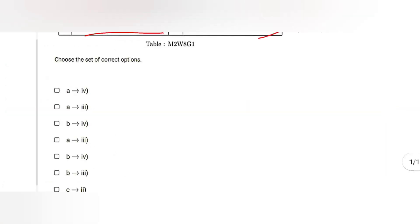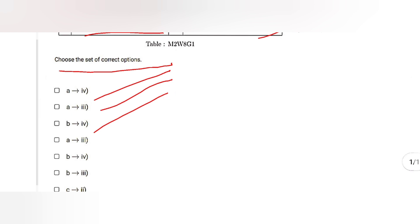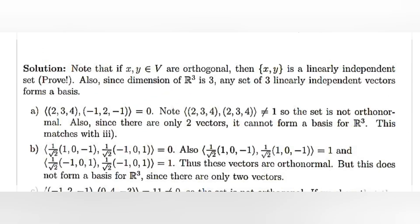We have to choose the correct set of options: first, A belongs to 4; second, A belongs to 3; third, B belongs to 4; then A belongs to 3 and B belongs to 4; then B belongs to 3 and C belongs to 2; and C belongs to 1.